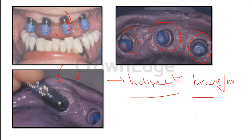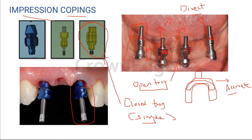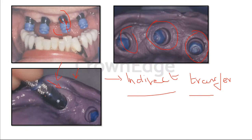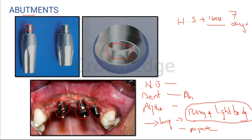This is your impression step in case of prosthetic rehabilitation of your implantation. After you have taken the impression, you place the impression coping inside. Once you have got the transfer, you can then move it into the cast. If you are doing an abutment level impression, the step remains the same — we remove the abutment from the patient's mouth and put it back into the impression itself.